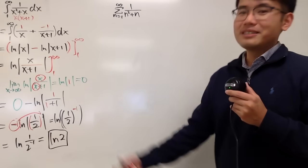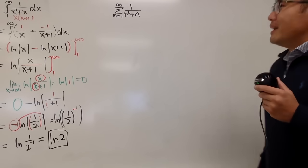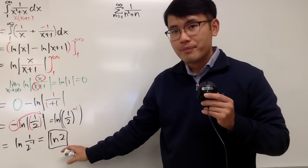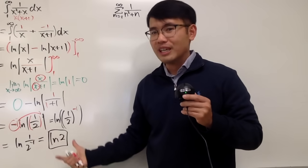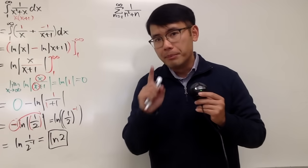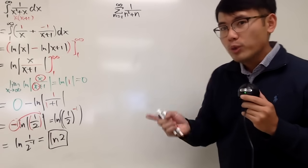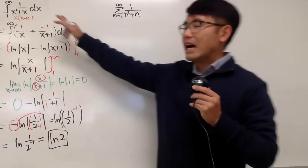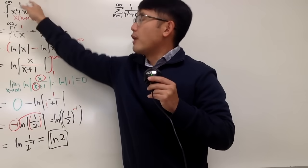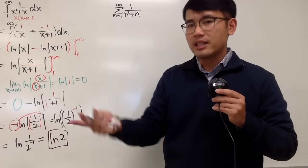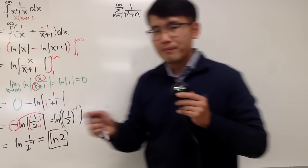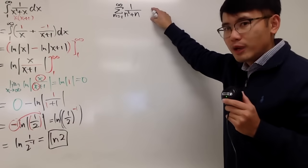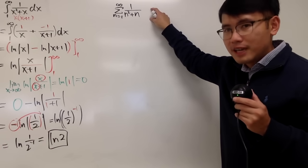So that's it. The improper integral here is a finite value, which means this converges, because we just did the computation. We can be sure this also converges by the integral test. You should also verify that this function is positive, decreasing, and continuous on this interval — but you can draw the picture on your own. We do know this converges by the integral test.